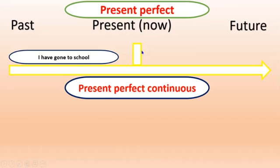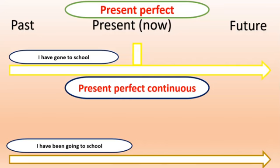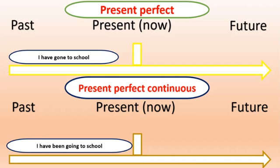Now, present perfect continuous — 'I have been going to school.' You have a timeline: past, present, and future. The difference is it starts in the past but nowadays it's still relevant — you are still doing it. In present perfect simple you have done it and it finished, but in present perfect continuous you have started and it is still happening in the present.